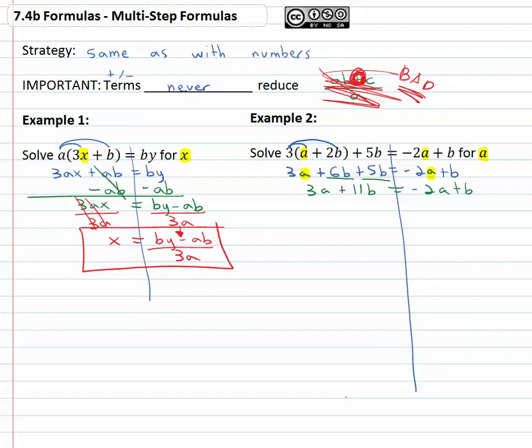We recall from solving equations after simplifying the left and right side, what we would often need to do is get the variable on one side. Specifically the variable we're looking for, we're looking for a, don't lose track of our goal, right now it's on both sides. Let's get it on one side of the equation. I usually move the smaller one, though technically it doesn't matter, so I'm going to add 2a to both sides to get all the a's on the left side. Now I have 5a, combining like terms, plus 11b equals b.